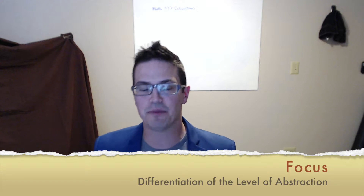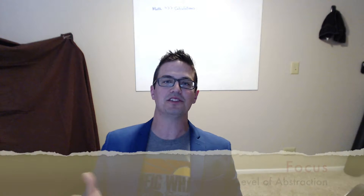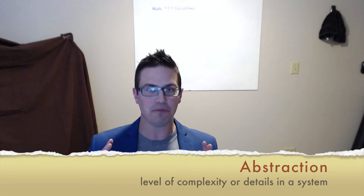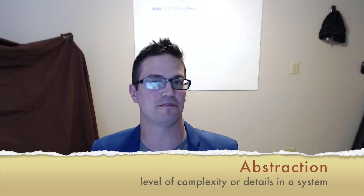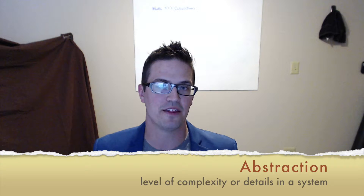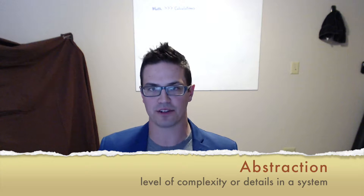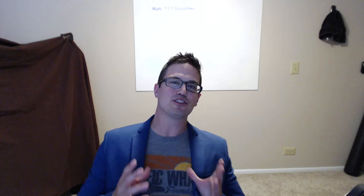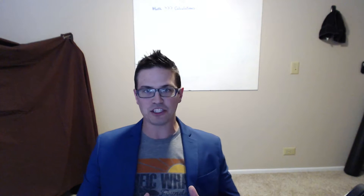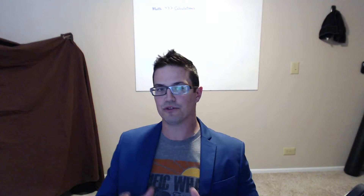Abstraction is the level of complexity — basically the level of details that are in a certain system or concept. The best way to explain what abstraction is, is to use a computer.